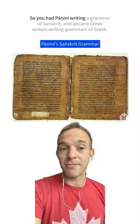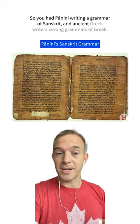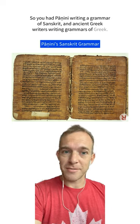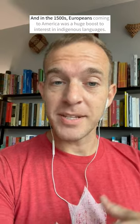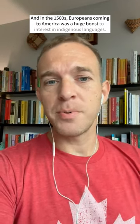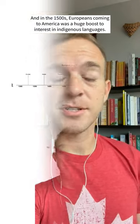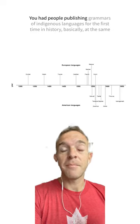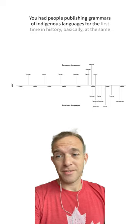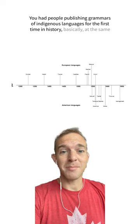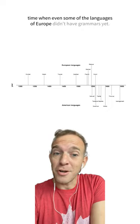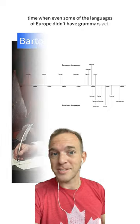You had Panini writing a grammar of Sanskrit and ancient Greek writers writing grammars of Greek. And in the 1500s Europeans coming to America was a huge boost to interest in indigenous languages — you had people publishing grammars of indigenous languages for the first time in history, even when some of the languages of Europe didn't have grammars yet.